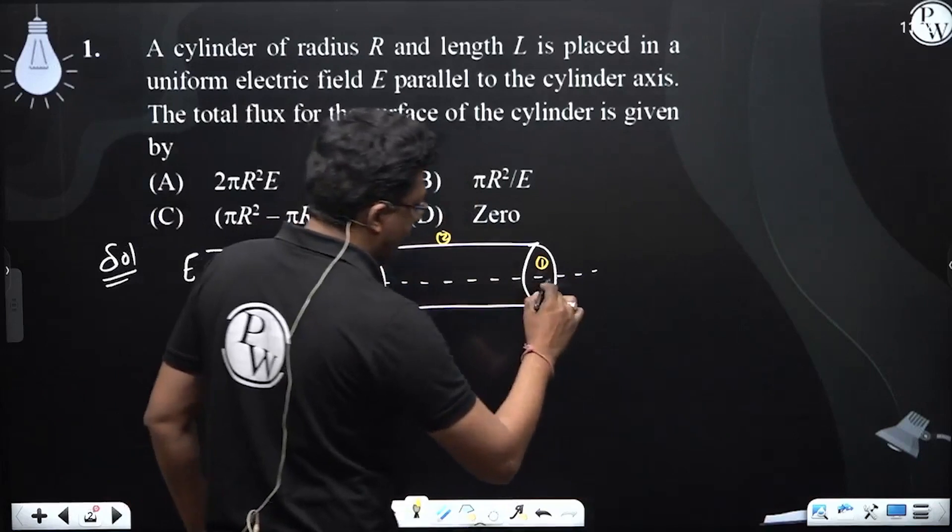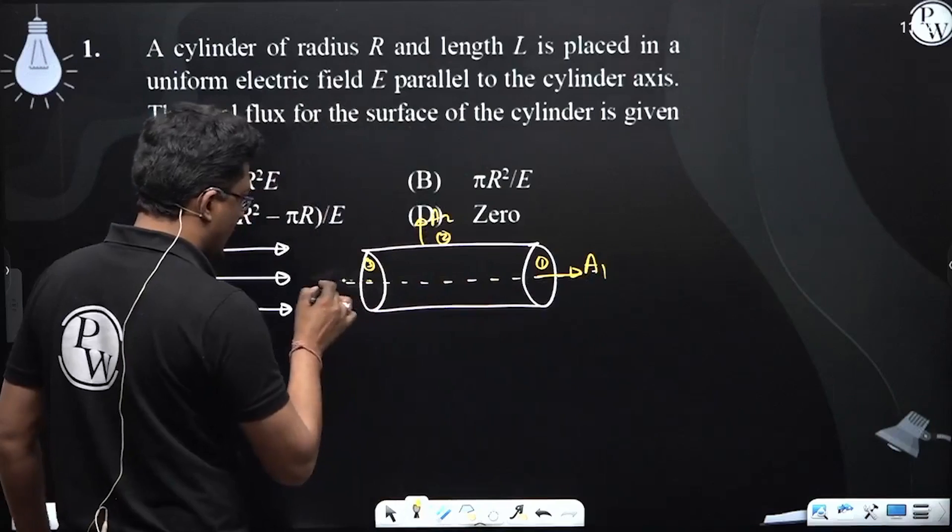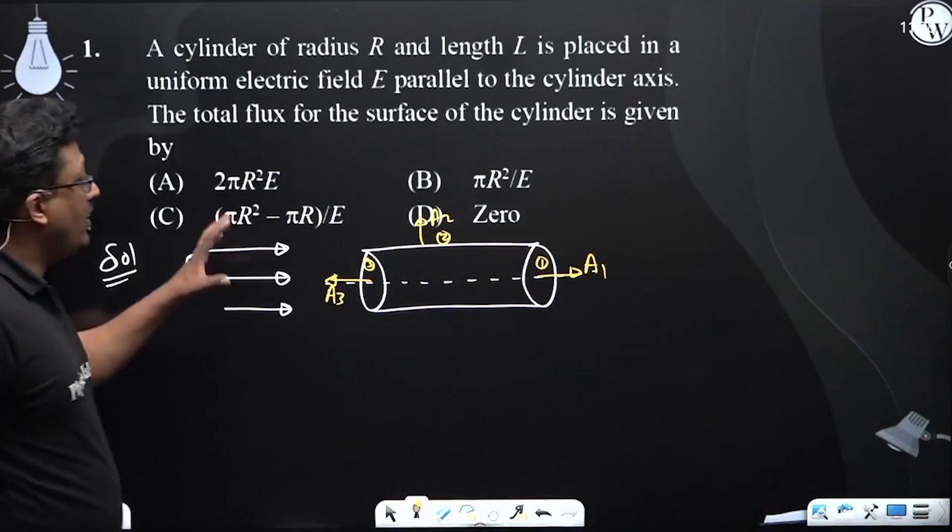All three have area vector. This is, say, A1, A2, and A3 in this direction.